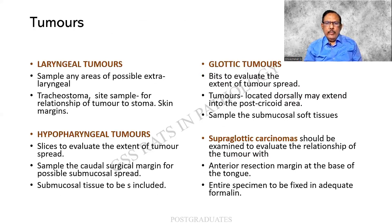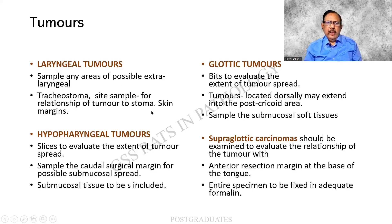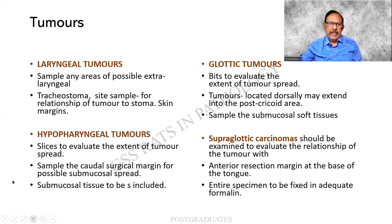Whenever we talk about tumors, there can be laryngeal tumors, hypopharyngeal tumors, glottic tumors, and supraglottic tumors. We need to know the extent of the tumor. The author suggests comparing it to the uterus and cervix — quite complex — where you find multiple structures by the side such as the fallopian tube, ligaments, and ovary. Similarly here. The hypopharyngeal tumors and the slicing of them shall be mentioned.